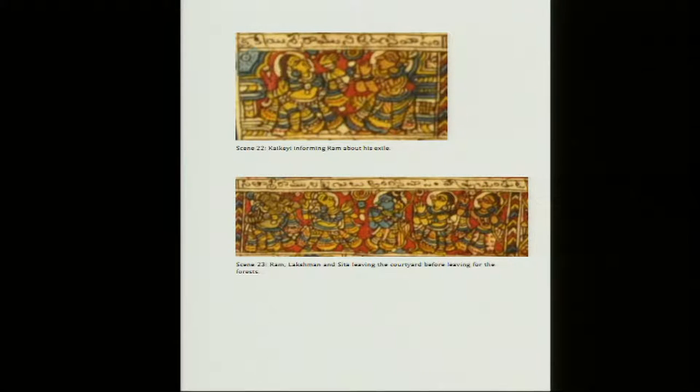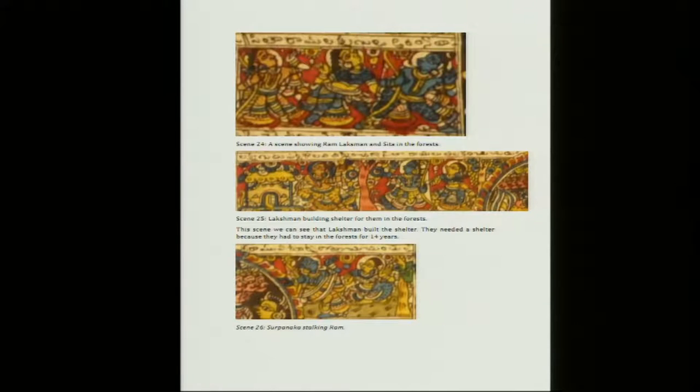With that the story goes on. Kaikeyi informs Ram about his exile; Ram, Lakshman and Sita leave the courtyard before departing for the forests. Sita accompanied Ram and Lakshman — as his follower, Lakshman also said he needed to be there for their protection — so three of them leave finally. A scene shows Ram, Lakshman and Sita in the forest, where Lakshman is building a shelter — a Parna Shala or Parna Kutir, a small hut made out of dry leaves — as shelter for them in the forest for the next 14 years.